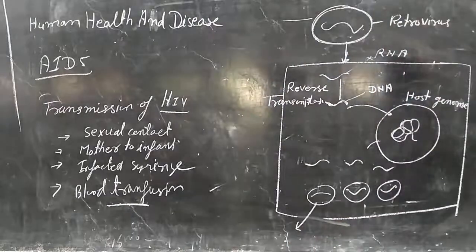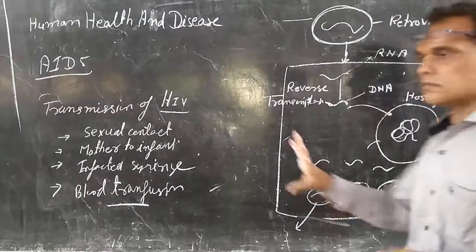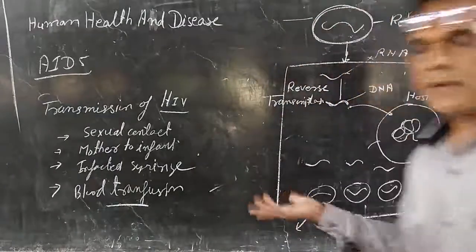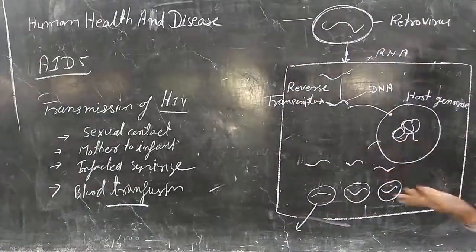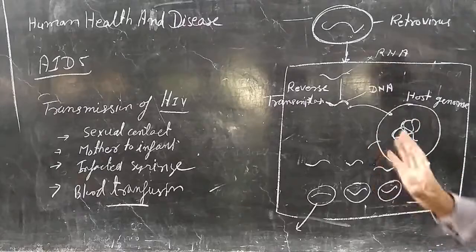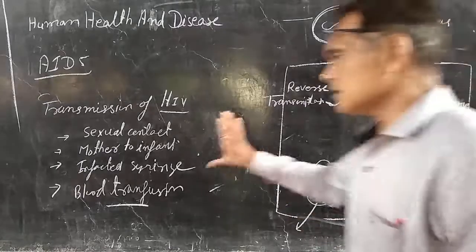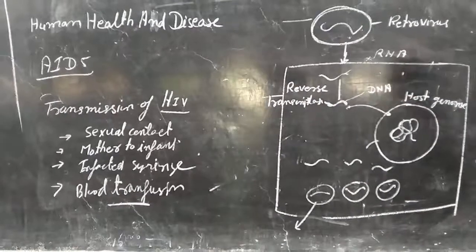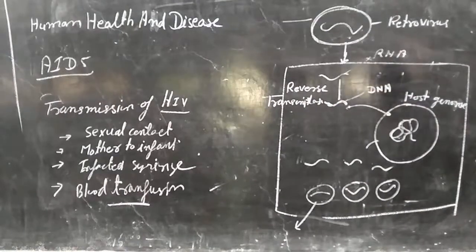Those who are at high risk include people who use contaminated injections. Infants whose mothers are affected from HIV are at high risk due to transmission from mother to their infants or their children.